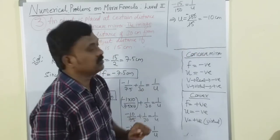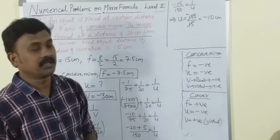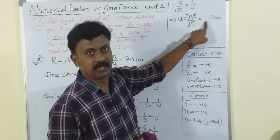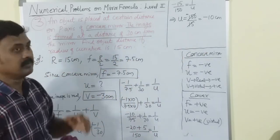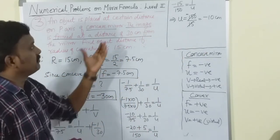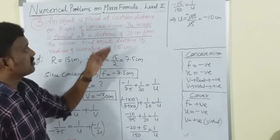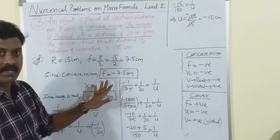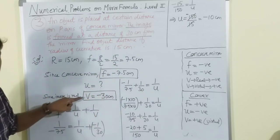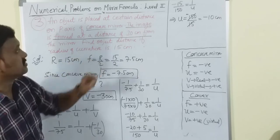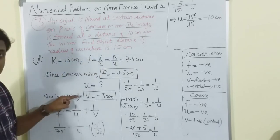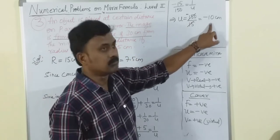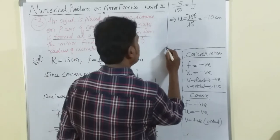We automatically got u as negative, which confirms our answer is correct. We didn't force the negative; we just followed the sign convention. Since v was real, we took it as minus, and the working gave us u = -10 centimeters automatically.